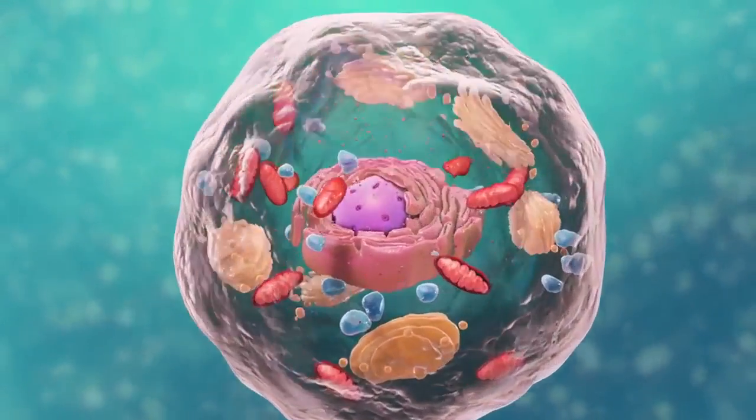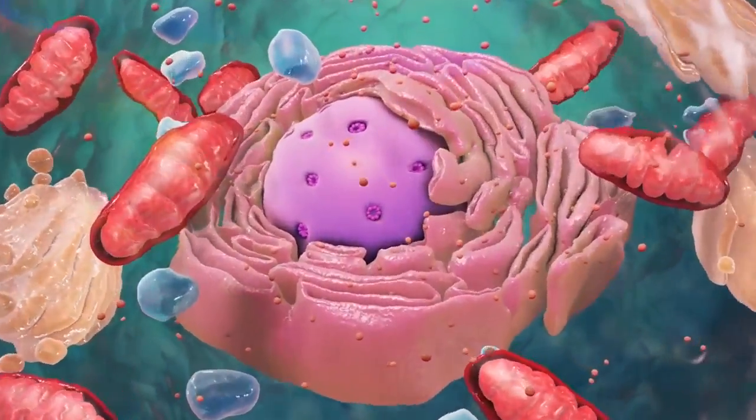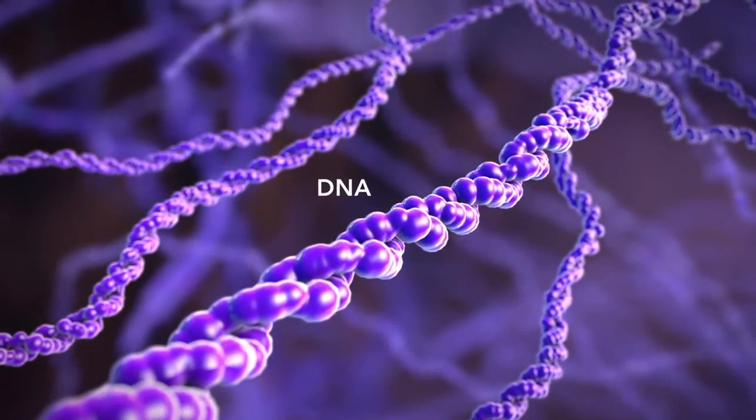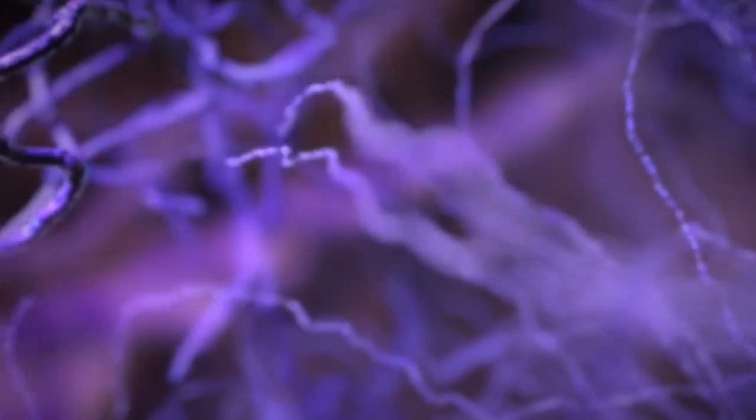Let's start with the nucleus, the control center of the cell. The nucleus contains DNA or genetic material. DNA dictates what the cell is going to do and how it's going to do it.